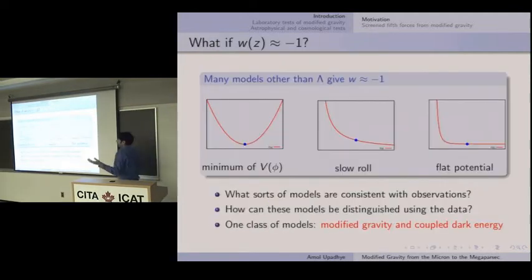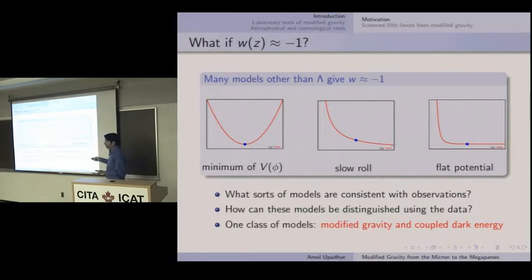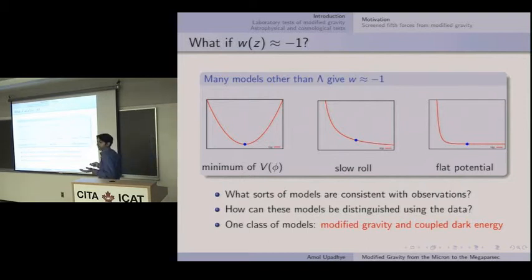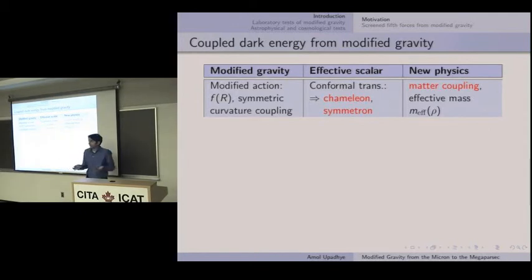So what if W(z) just is minus one? There are plenty of dynamical models in which the field can sit at the minimum of a potential, or slowly roll down a potential, or just have a really flat potential. These will give the same expansion history you would expect in simple lambda. One possible way to distinguish them is to look for couplings to matter particles. As a general class, modified gravity models tend to do this. Let me discuss several different modified gravity models and work through a theoretical toolbox of things you can expect in a low-energy effective dark energy theory when you start with a modified gravity.